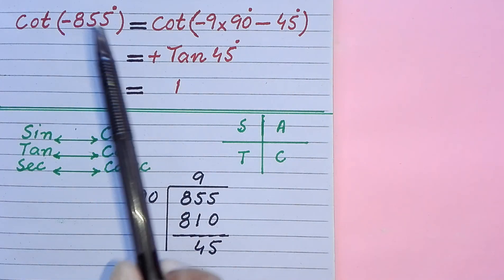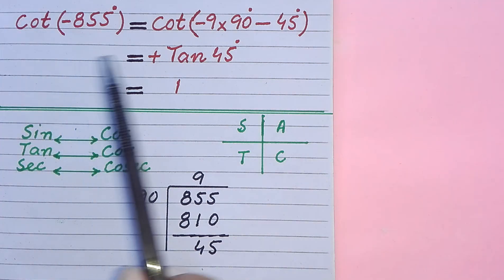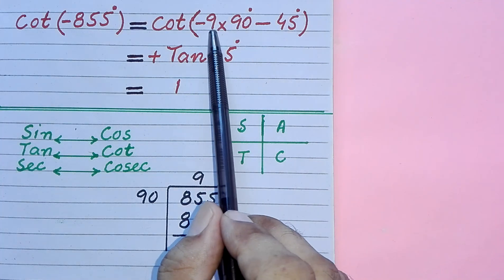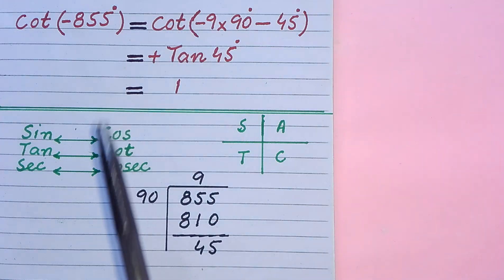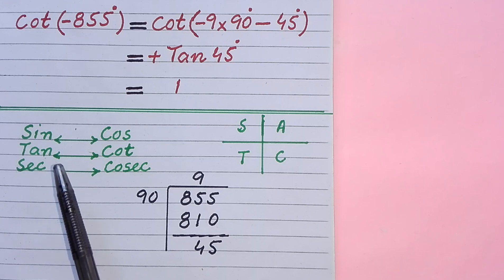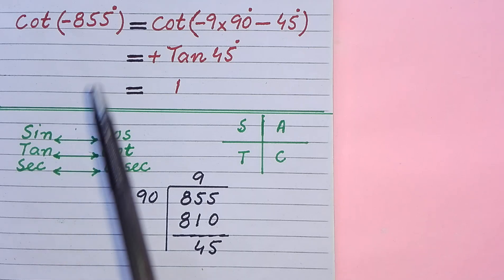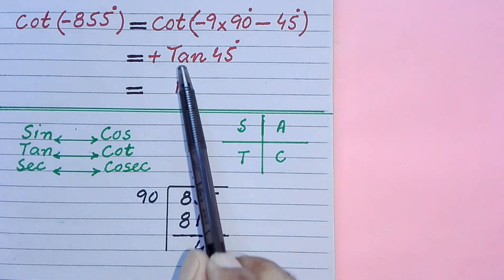Now we decide about the status of the given trigonometric function, and it is done by looking at the multiple of 90 degrees. Remember, if the multiple of 90 degrees is an even number, then the function does not change. If it is an odd number, then the function changes — sin and cos mutually interchange, tan and cot interchange, and secant and cosecant mutually interchange. In this case, the multiple of 90 degrees is an odd number, so cot changes into tan.